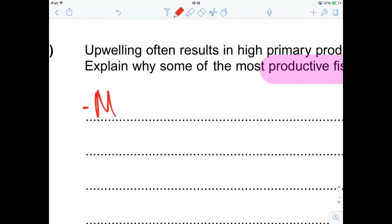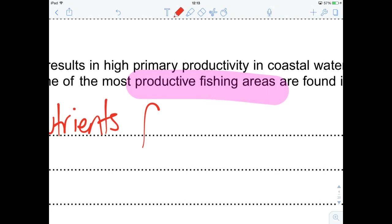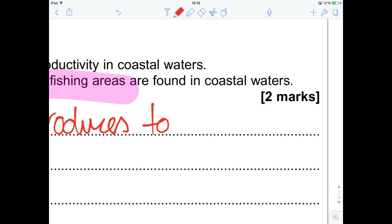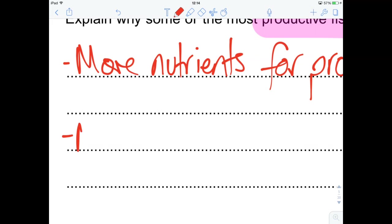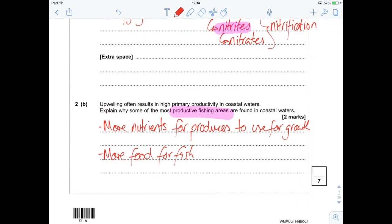more nutrients for producers or plants. We're going to go for producers to use for growth. And if there's more plants, if there's more producers, there's more food for the organisms at the higher trophic levels, such as fish. Nice. More food for fish. And that is going to get you your 2 marks.